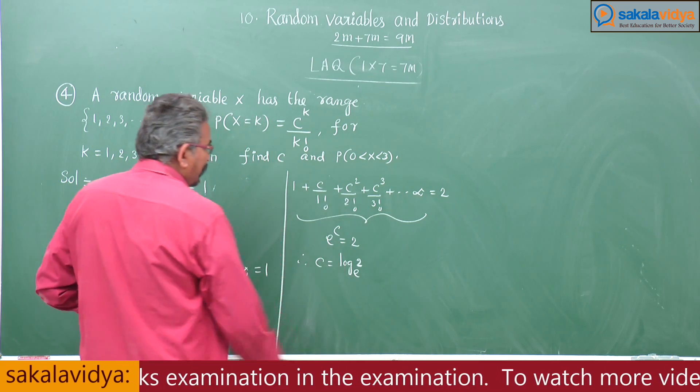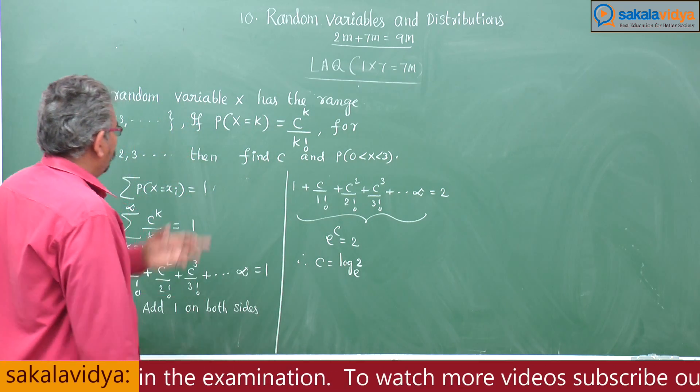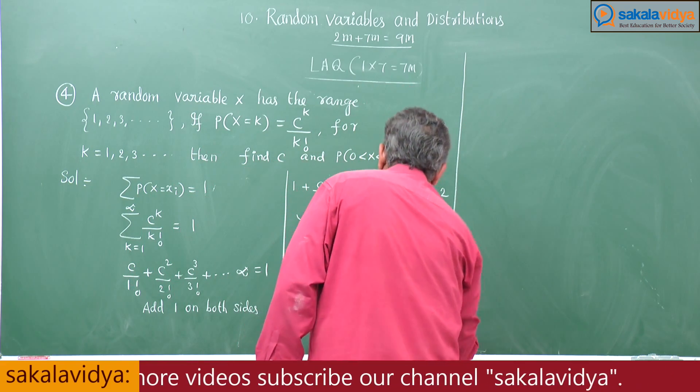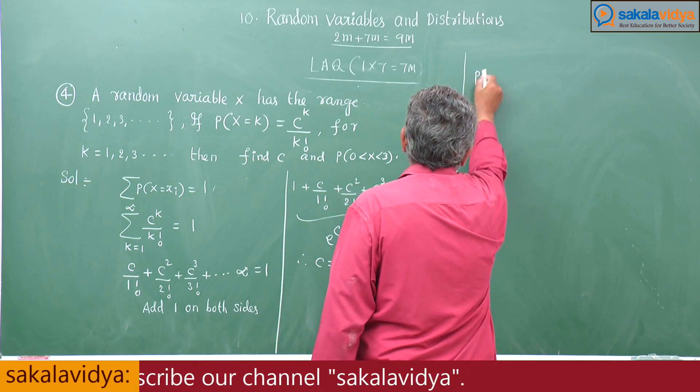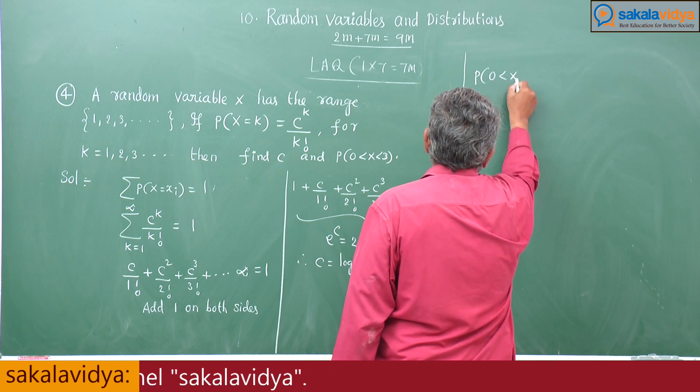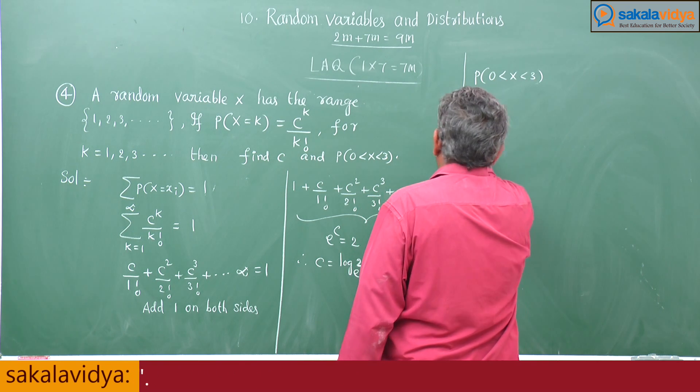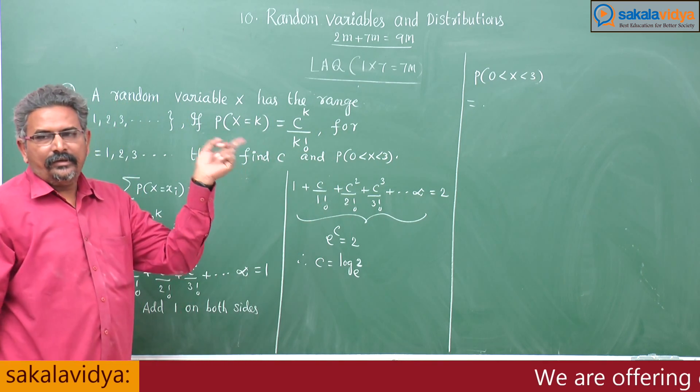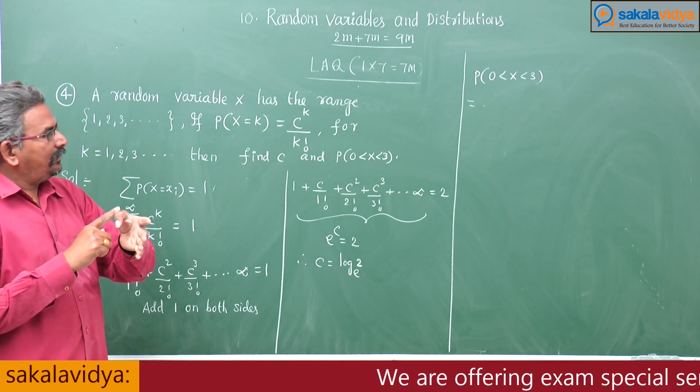Now c value has been obtained. Now we have to find out the next one: p of 0 less than x less than 3. That means 0 is not included, 3 is not included, so 1 and 2 only.